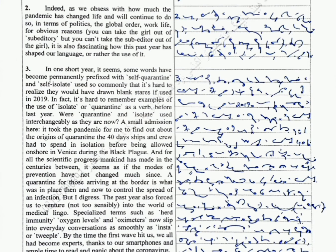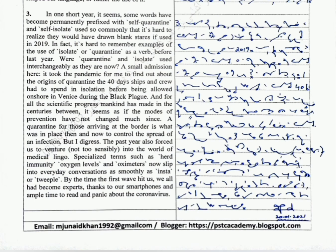And for all the scientific progress mankind has made in the centuries between, it seems as if the modes of prevention have not changed much since. A quarantine for those arriving at the border is what was in place then and now to control the spread of an infection. But I digress.